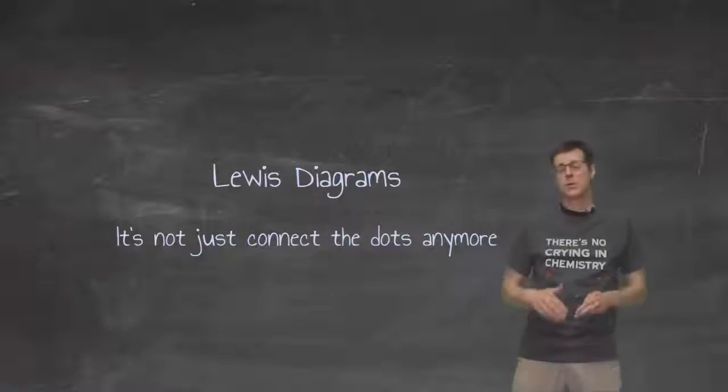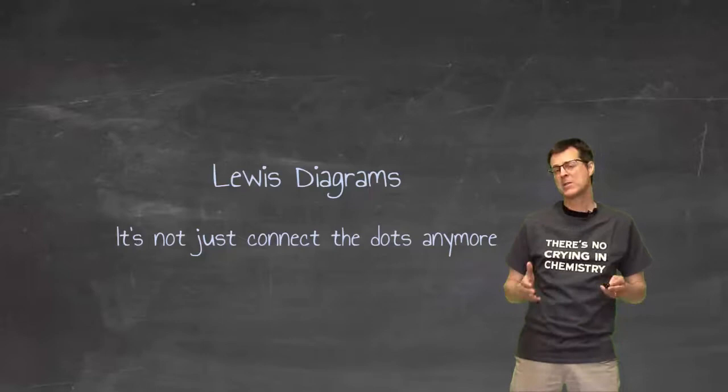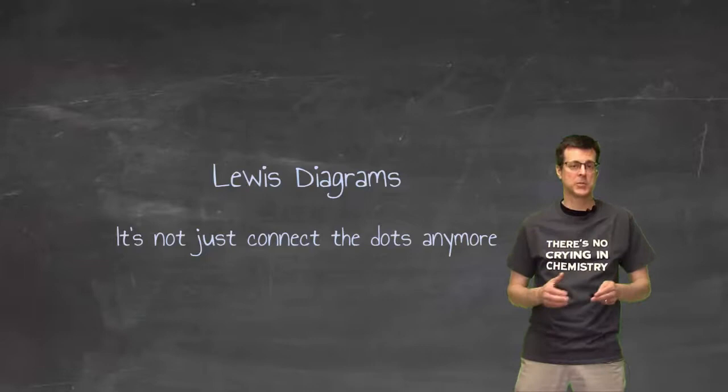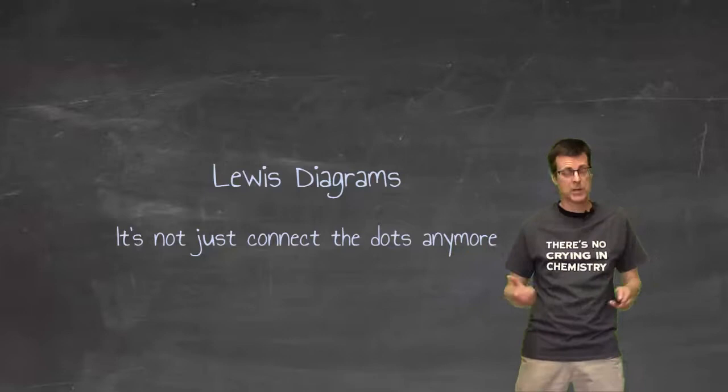I'm not sure if you've called these things Lewis Diagrams before. You might have called them something else. But the basic point of what we're after today is to draw a picture of something that looks as close as possible to a molecular structure. Now if you've seen it before, what you've probably done is just connecting some dots.